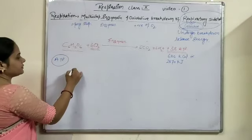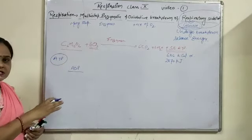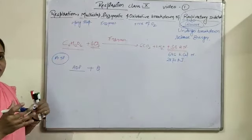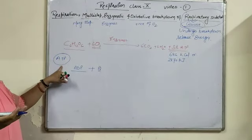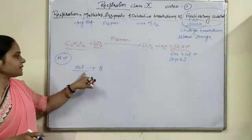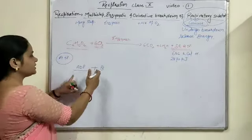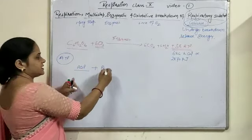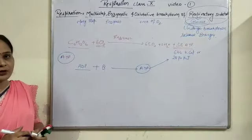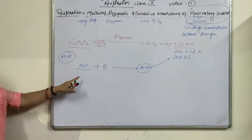ATP is produced when ADP (adenosine diphosphate), already present in the cytoplasm, combines with inorganic phosphate (Pi). When ATP is used for further metabolic processes in our body, it is converted back into ADP and Pi. Then, when respiration occurs, this Pi again joins with ADP to form ATP, which again contains that amount of energy. This is how ATP formation takes place.